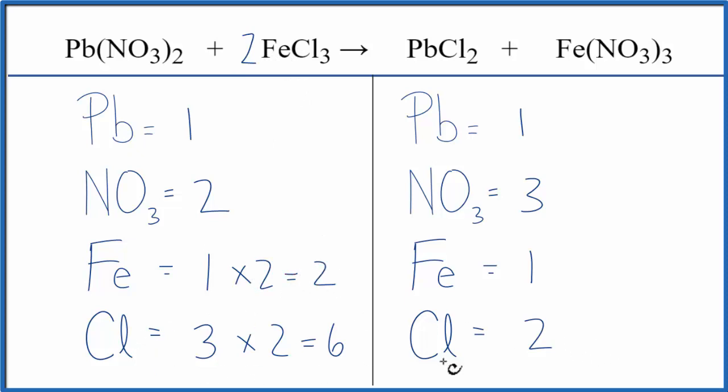Now let's fix the chlorines. Because now that this is an even number, I could put a three in front of the PbCl2. So two times three gives me six. That balanced the chlorines. And then one times three gives me three leads. But I feel like I'm getting closer.